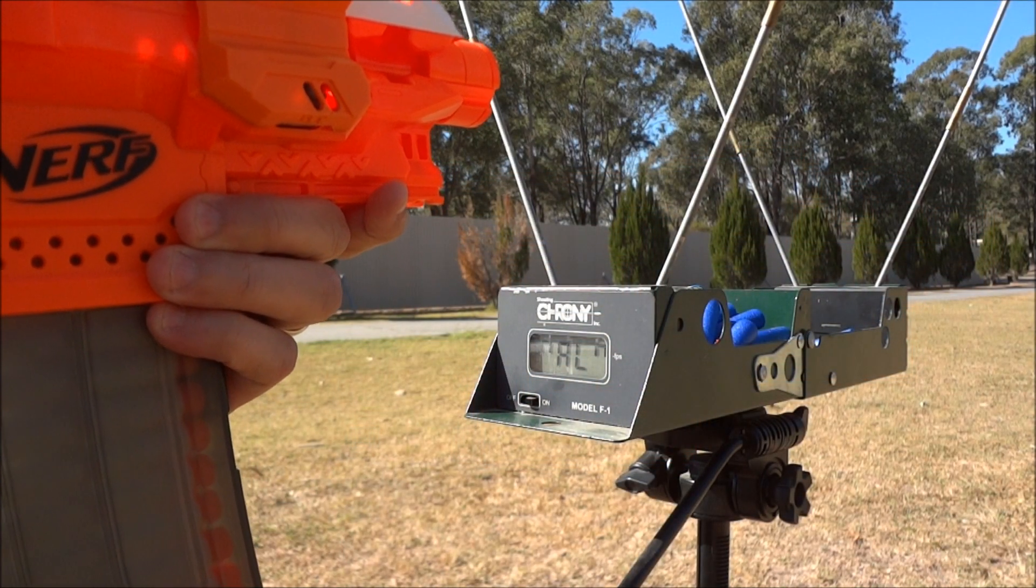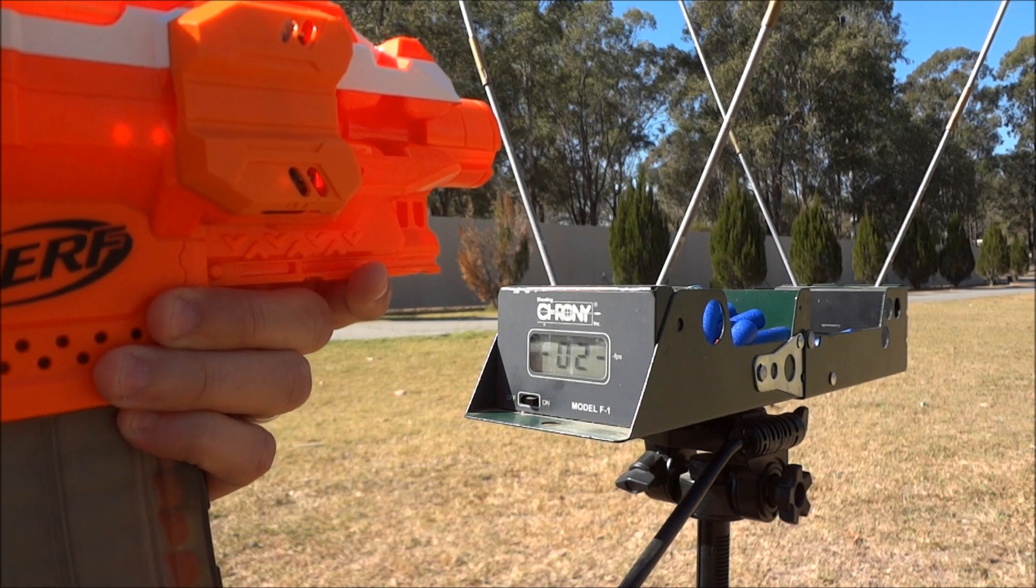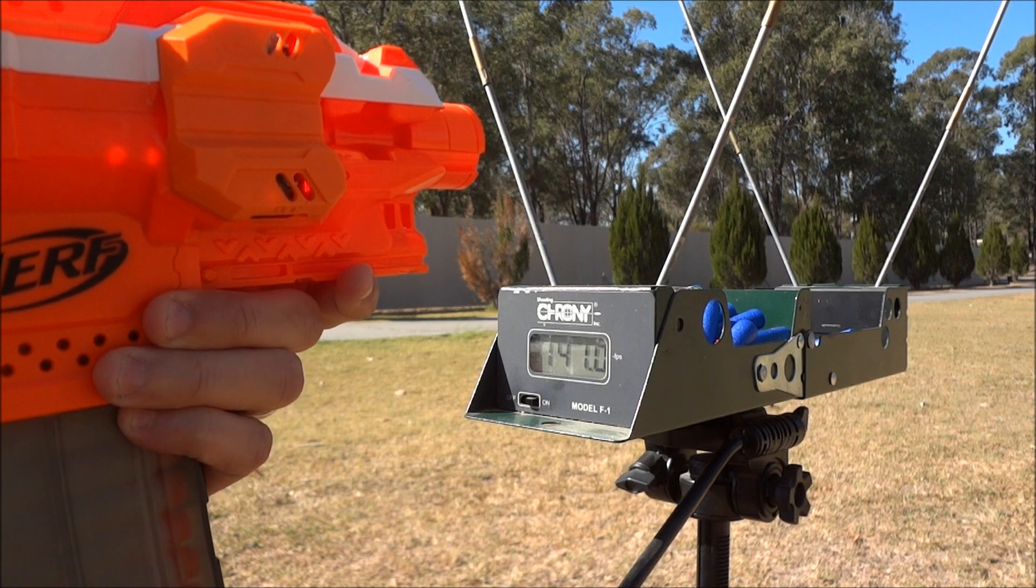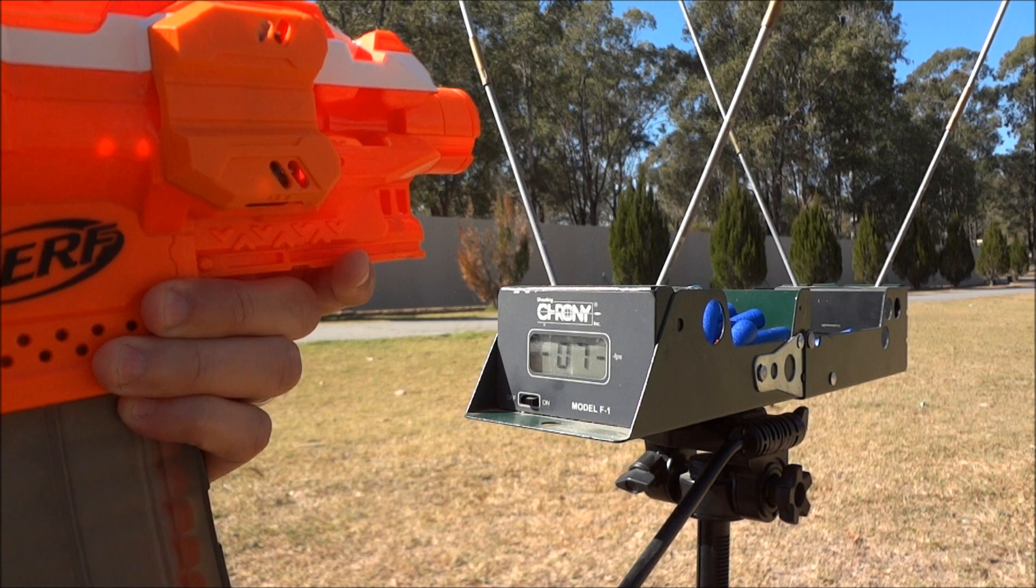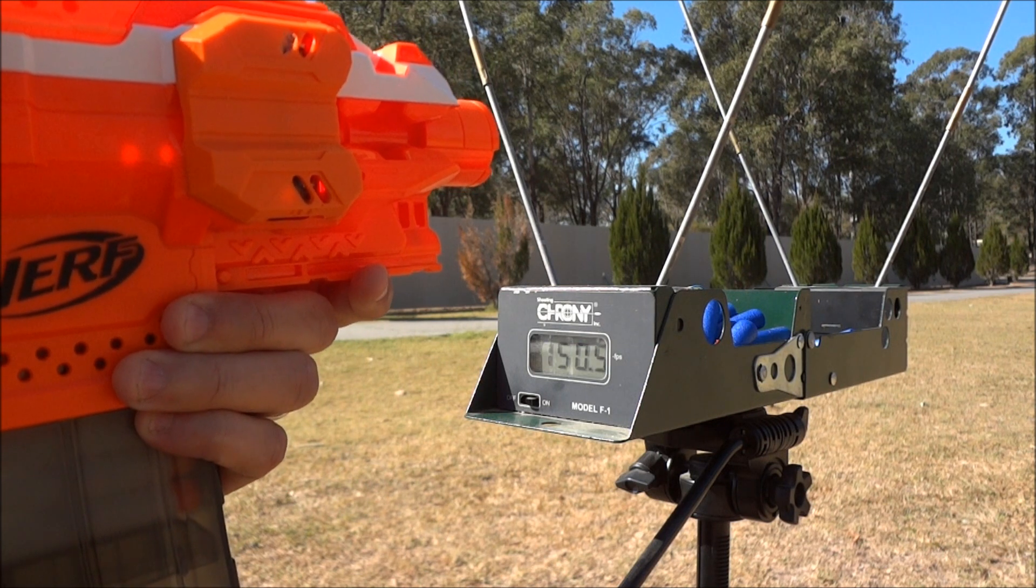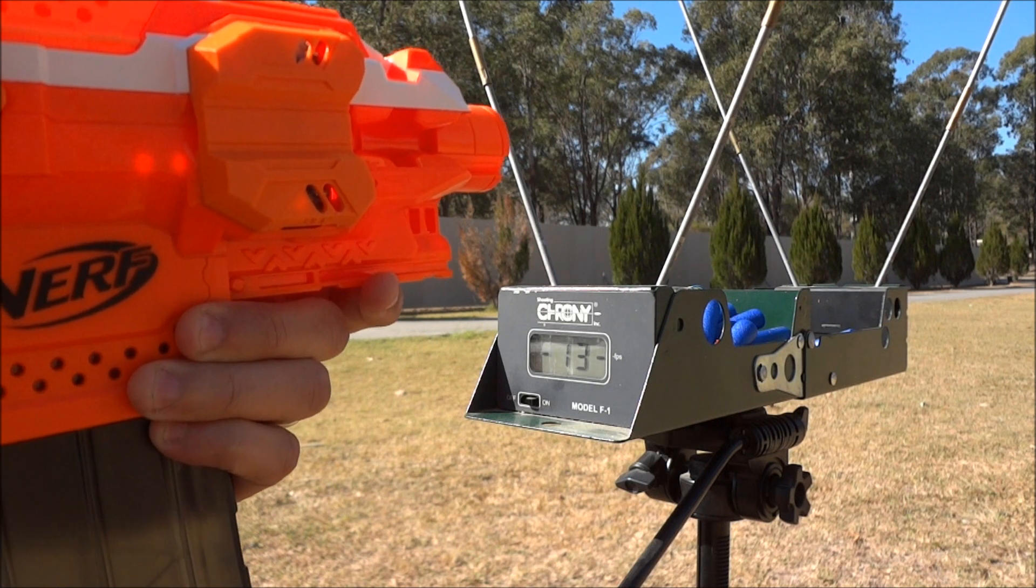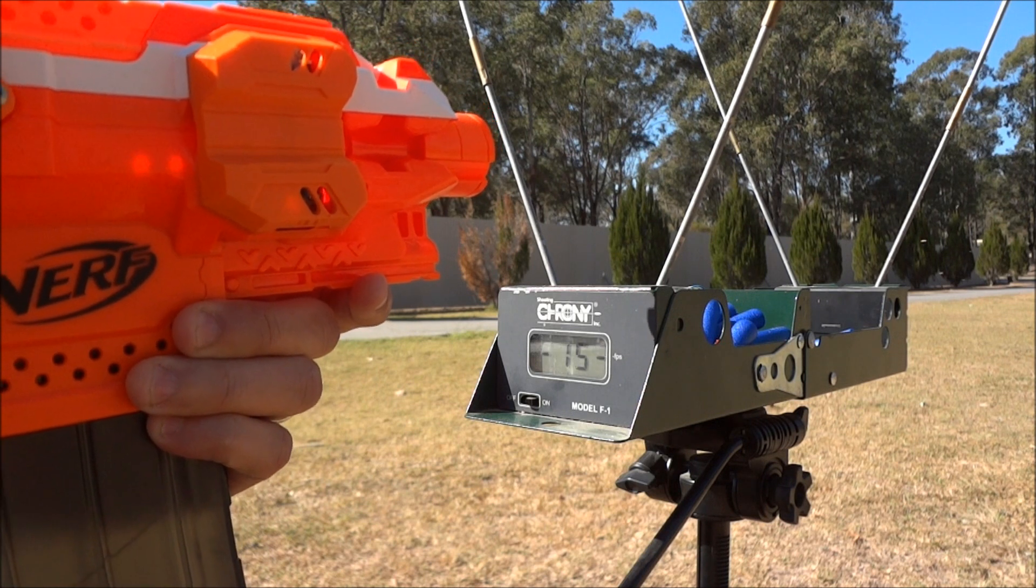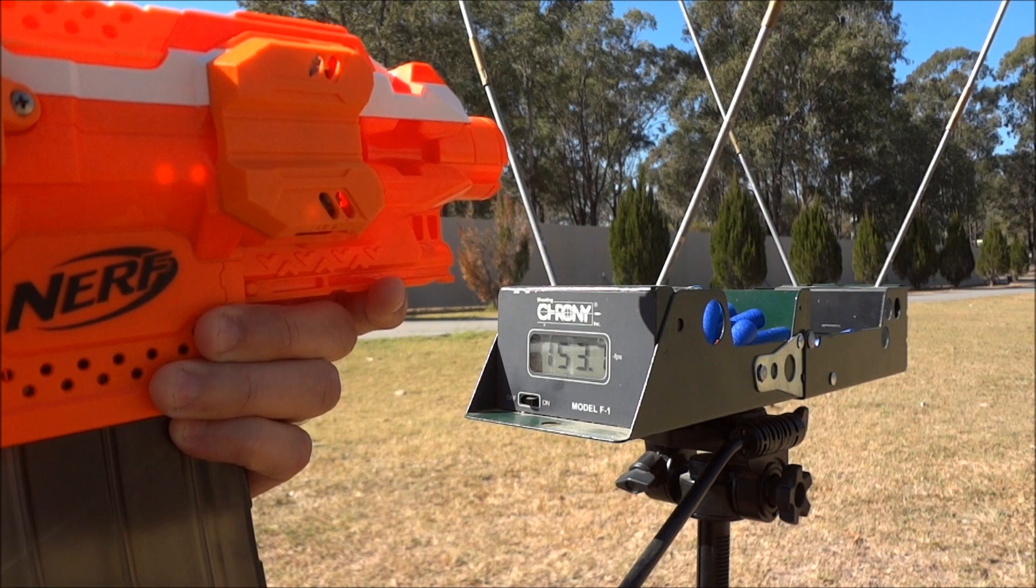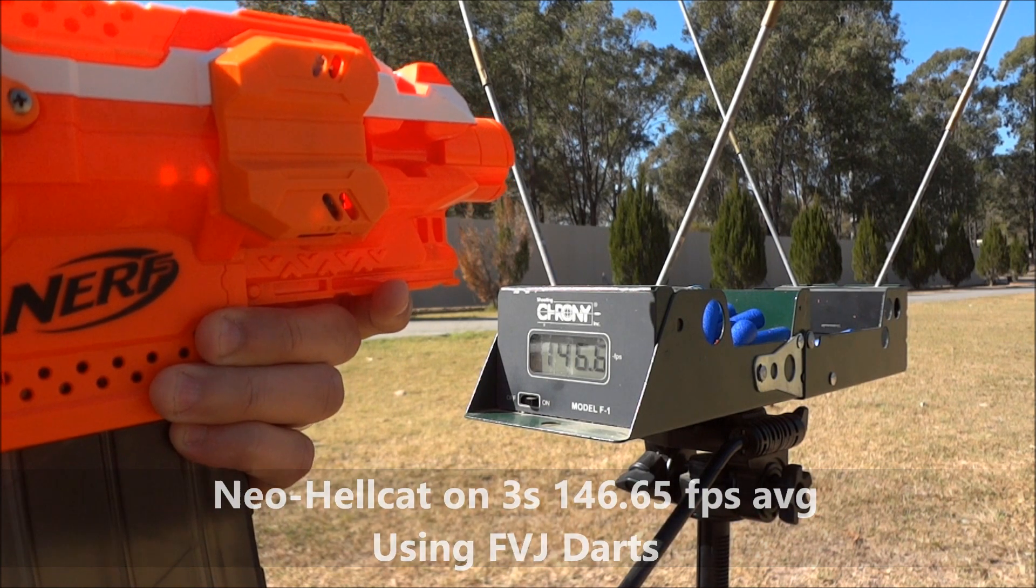Neo Hellcats, 3S LiPo, FVJs. Testing FPS readings: 141, 151, 140, 148, 141, 148, 144, 143, 145, 150, 148, 149, 147, 146, 157, 142, 153, 148, 146, 146.